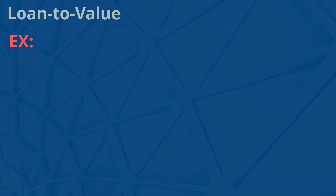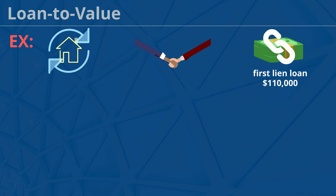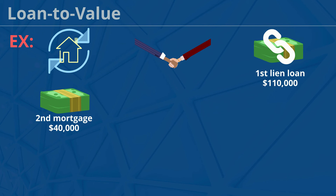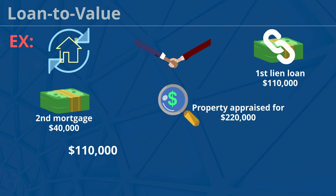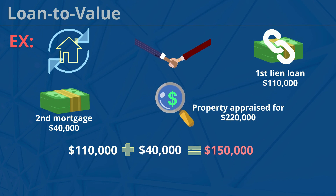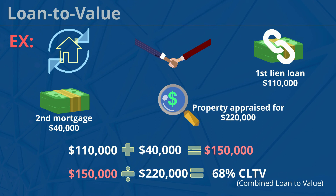Let's do an example together. In this refinance transaction, the borrower has a first lien loan of $110,000 and a second mortgage of $40,000. Their property appraised at $220,000, so what is their CLTV? Our first step is to add the value of the first lien, $110,000, to the value of the second lien, $40,000, to get $150,000 for the total loan amount. Then we divide that by the appraised value of $220,000. So $150,000 divided by $220,000 equals 68% CLTV, or combined loan-to-value.